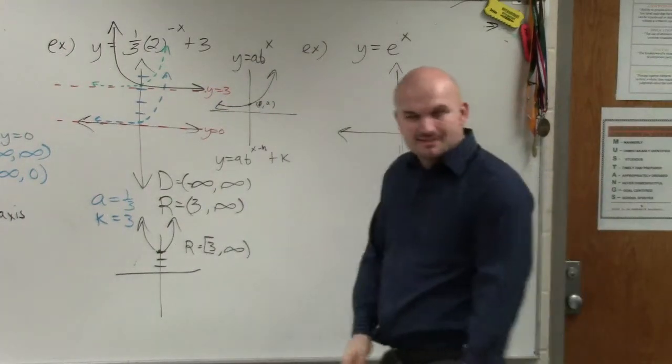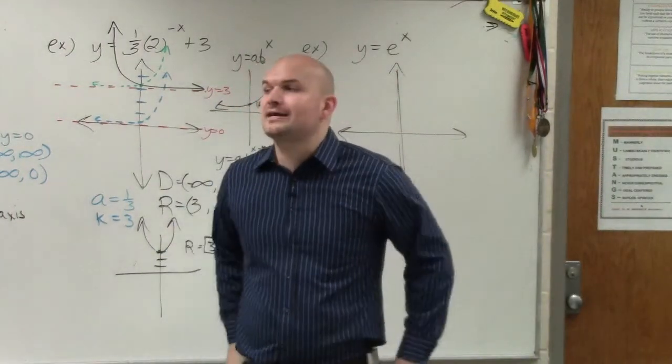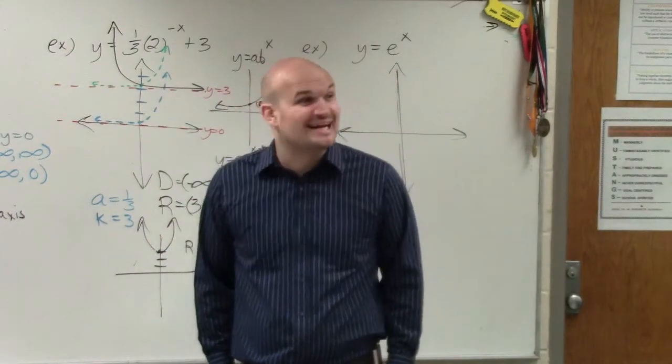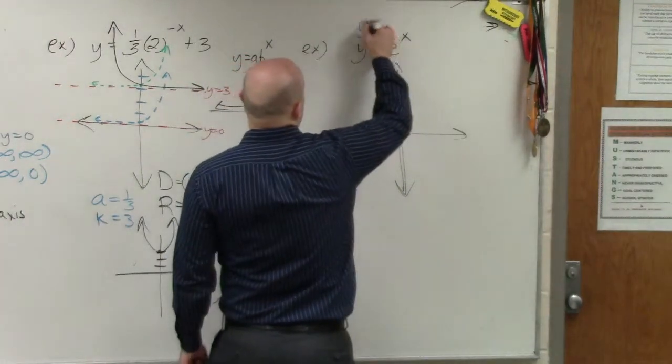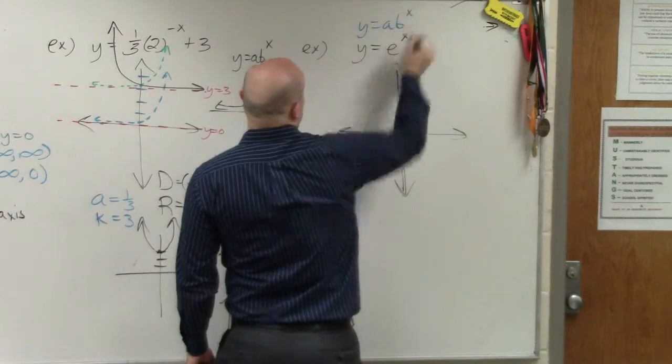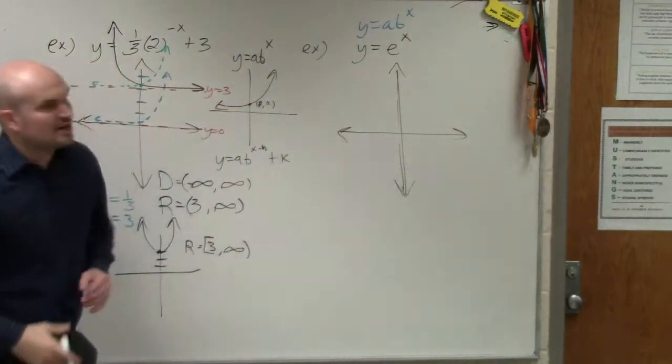I have y equals e to the x. Now, I was hoping you guys would try and attempt to graph this without really having any idea what e to the x is, because as long as you know y equals a times b to the x.